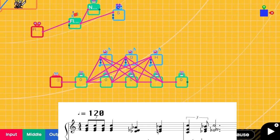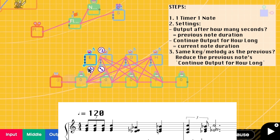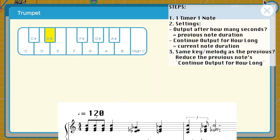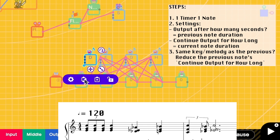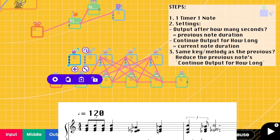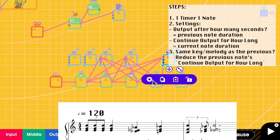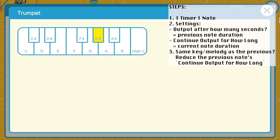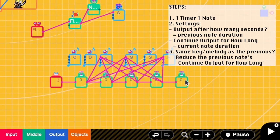So I'm going to add more keys and then continue with the rest. So basically there are three steps. The first one is to add one timer per one note. The second one is to go to the setting and set the output after how many seconds to be the previous note duration. And to set the continue output for how long to be the current note duration.